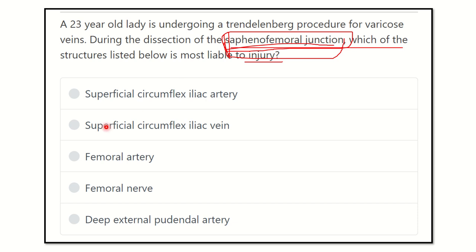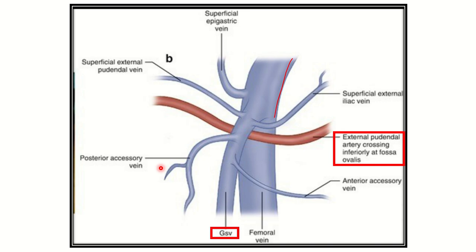The options are: superficial circumflex iliac artery, superficial circumflex iliac vein, femoral artery, femoral nerve, and deep external pudendal artery. We have to find out which one of these options is the answer to this question.